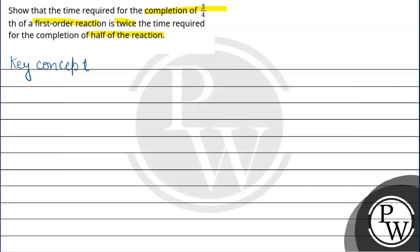An expression for the first order reaction is Kt = 2.303 log(a/(a-x)), where x is basically how much has dissociated or completed. First, let's see t3/4.